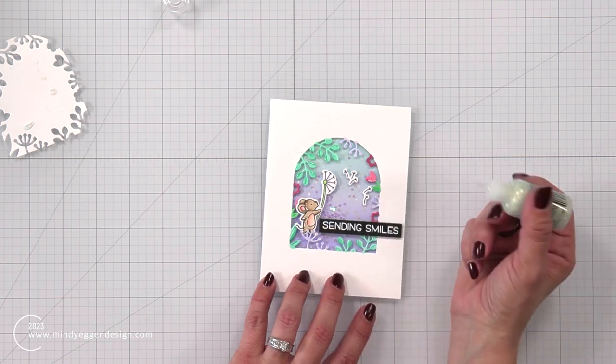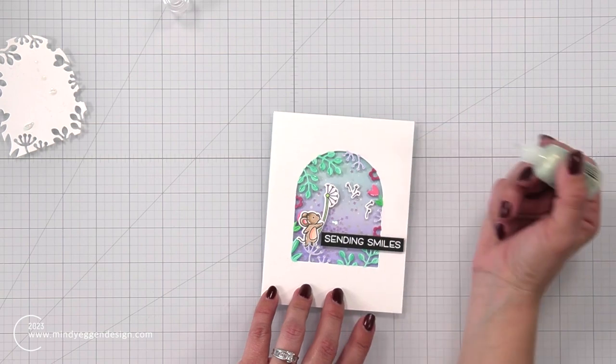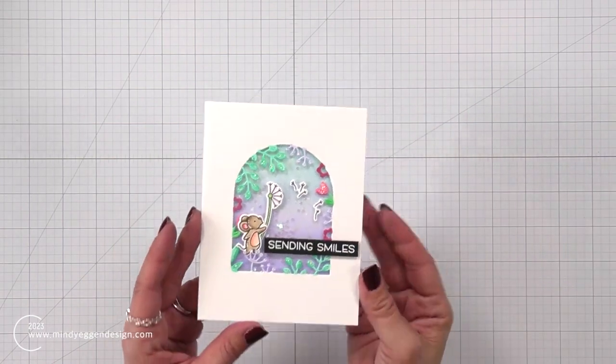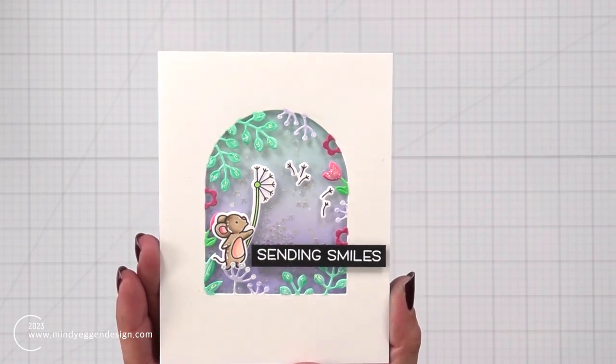And then I'm adding my stickles. So I did some little dots here and there. Some of them I just added a line. I didn't color it in all the way. And once you see the close-up of it, it just really has a nice sparkle to it.